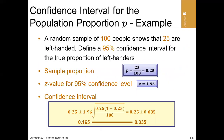Let's look at an example. A random sample of 100 people shows that 25 are left-handed, so the sample proportion is 25 over 100, which is 0.25. We need to find a 95% confidence interval for the true proportion of left-handers. Since we don't have the population proportion, we use p-bar as the best estimate, and the z-value for 95% confidence is 1.96.